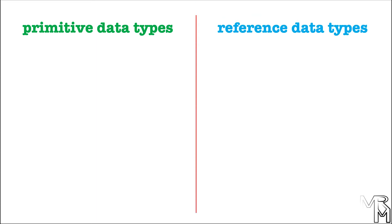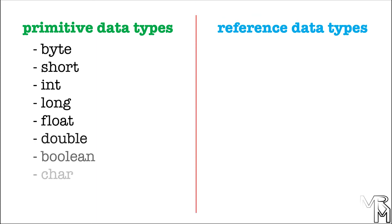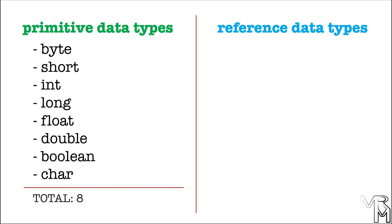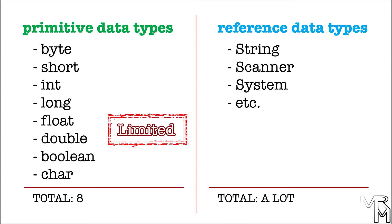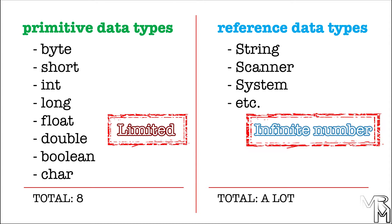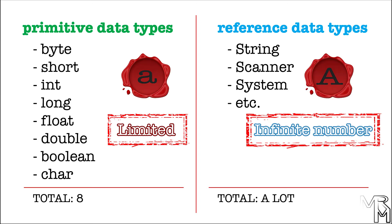Primitive data types include int and seven other data types that you can see on the screen now. You don't need to know all eight by heart at this point. What I'd like you to know is that there's a limited number of primitive data types and basically an infinite number of reference data types in Java. Primitive data types begin with a lowercase letter, while reference data types generally begin with a capital letter, with some exceptions.